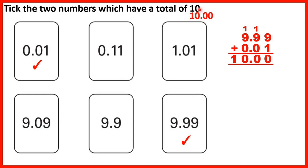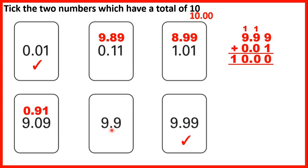With 0.11 we would need 9.89 to make a total of 10.00. For 1.01 we would need 8.99. For 9.09 we would need 0.91, and for 9.9 we would need 0.1 — that's 1 tenth, not 1 hundredth.